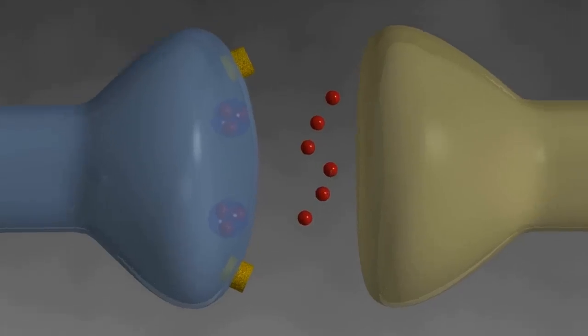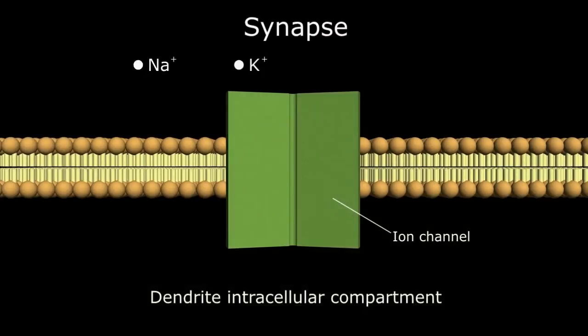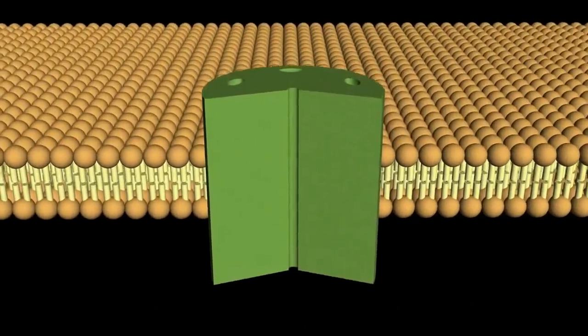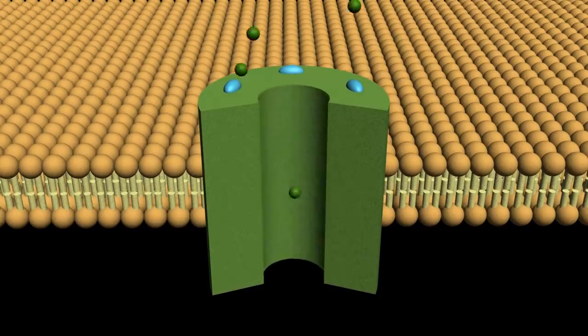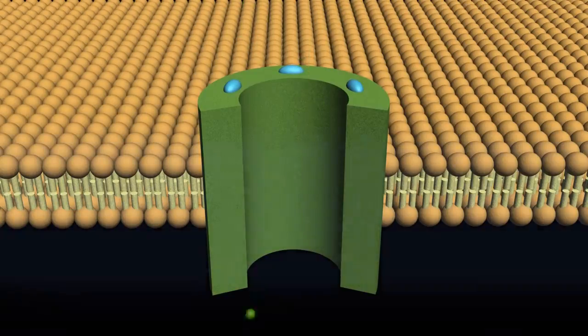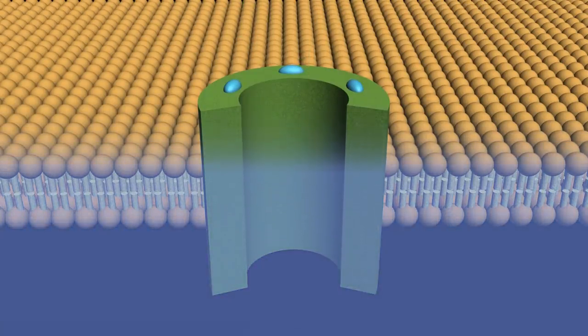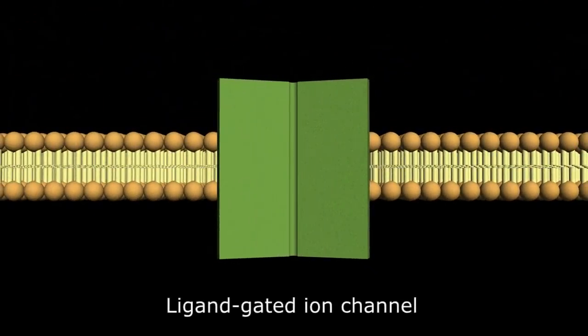Just like on the axon, there are ion channels on the postsynaptic dendrite that allow the transmembrane flow of sodium, potassium, calcium, and sometimes chloride ions, but unlike the axon, these channels respond to ligand binding rather than membrane depolarization. Glutamate binding to the channel receptors causes the channel to open and allow sodium ions to enter the cell and depolarize the membrane. If enough sodium enters the cell, an action potential is induced and the signal is propagated down the line. Since the glutamate receptors allow the flow of ions across the cell membrane, this type of channel is called ionotropic.